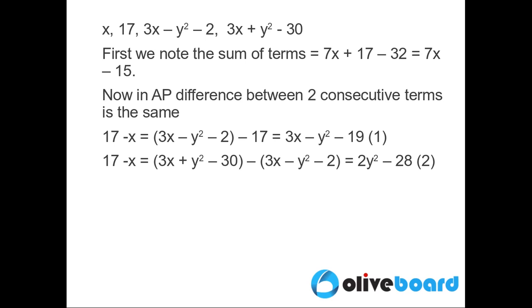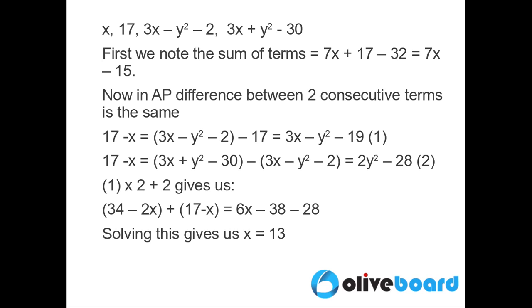So if we take equation 1 and multiply it by 2 and add it to equation 2, we get 34 - 2x plus 17 - x is equal to 6x - 38 - 28, or x equal to 13, which means the sum, which is equal to 7x - 15, is 76, which is divisible by 2.